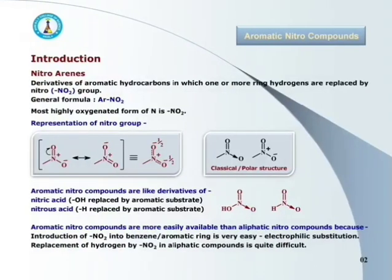Aromatic nitro compounds, that is nitroarenes, are the derivatives of aromatic hydrocarbons in which one or more ring hydrogens are replaced by nitro group, that is by NO2. The process of replacement of one or more hydrogens of benzene nucleus by nitro group is known as nitration. The general formula of nitroarenes is ArNO2, where Ar stands for the aromatic ring like benzene.